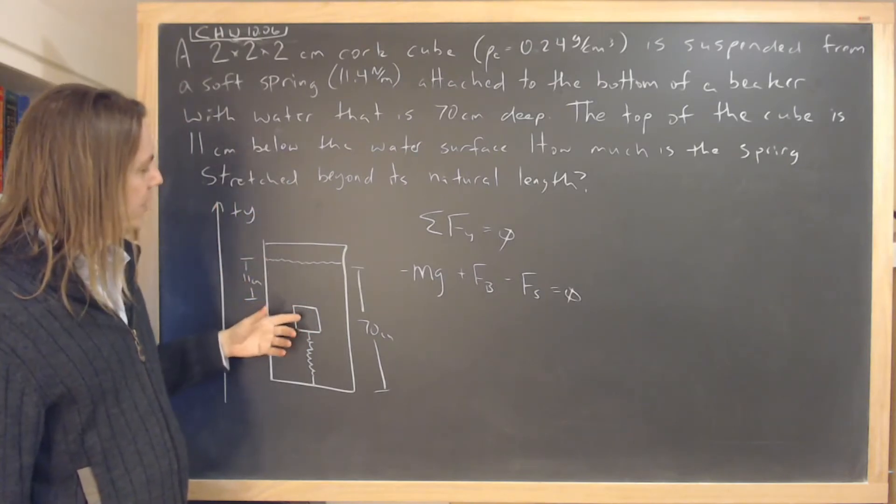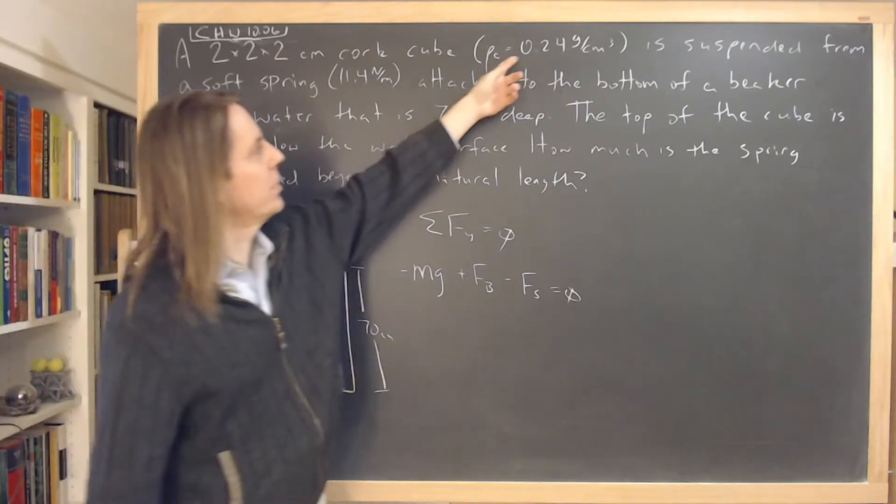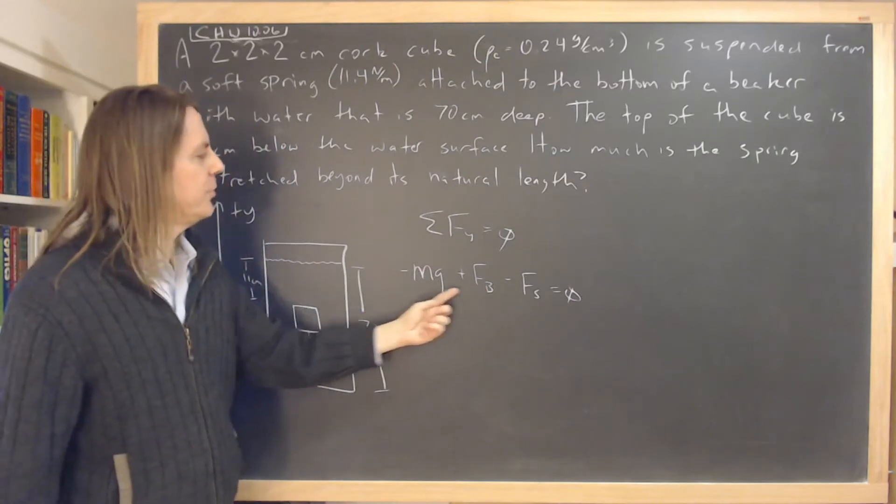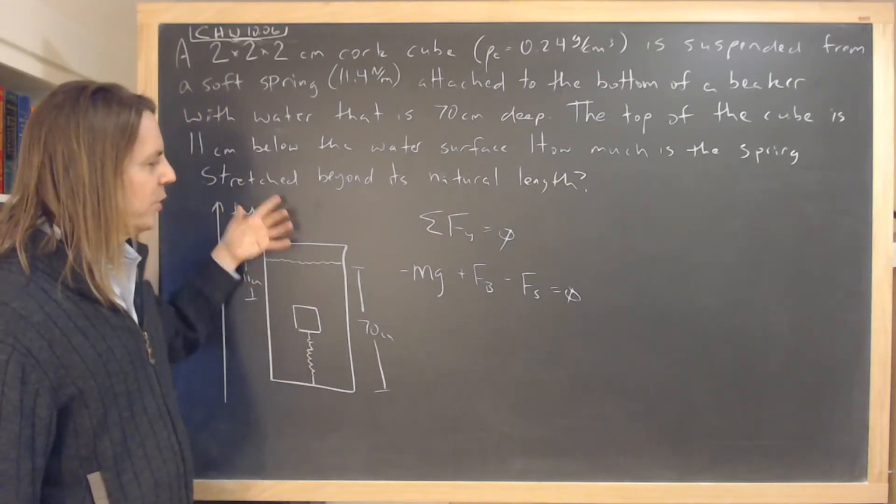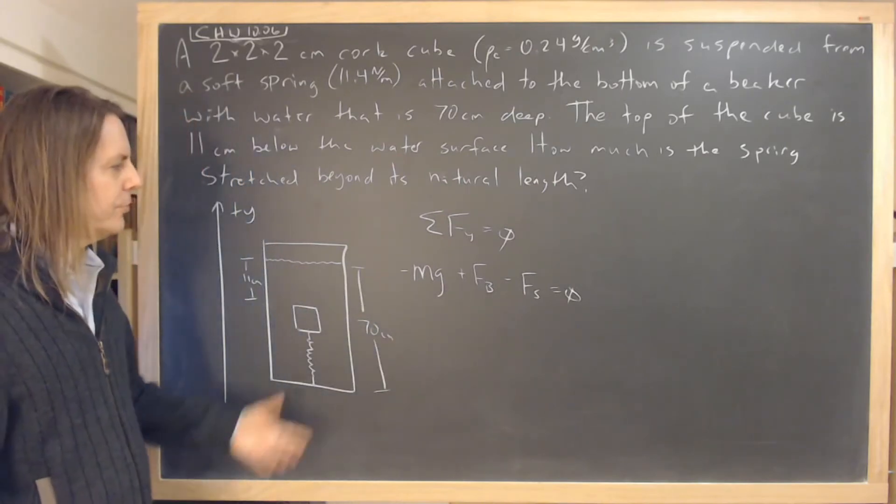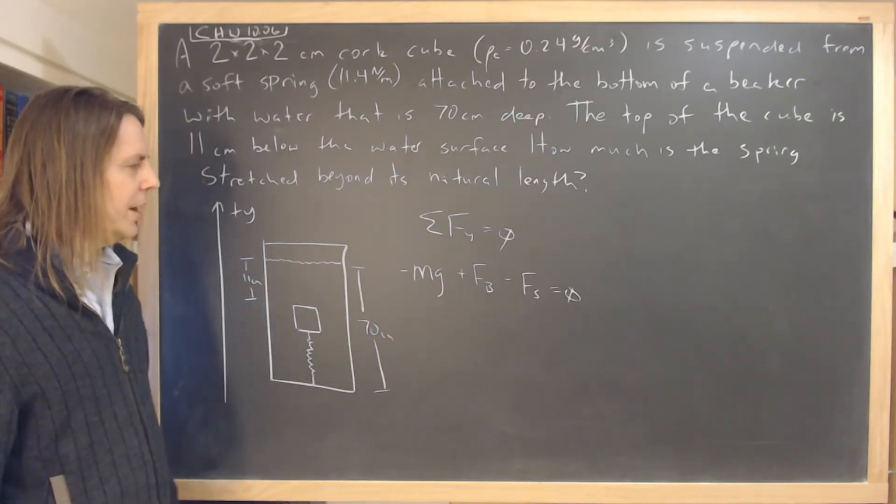Right? Because it's the weight of the water displaced and the cork has a lower density than the water. So this force is bigger than this force. So that's why the cork floats. So the only way you're going to keep the cork from going up and floating is if the spring force is down. So there's a few ways to know that the spring force has to be down.